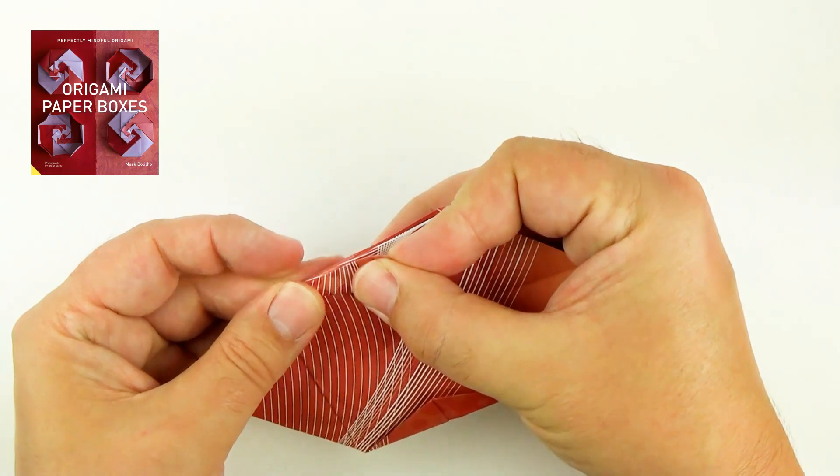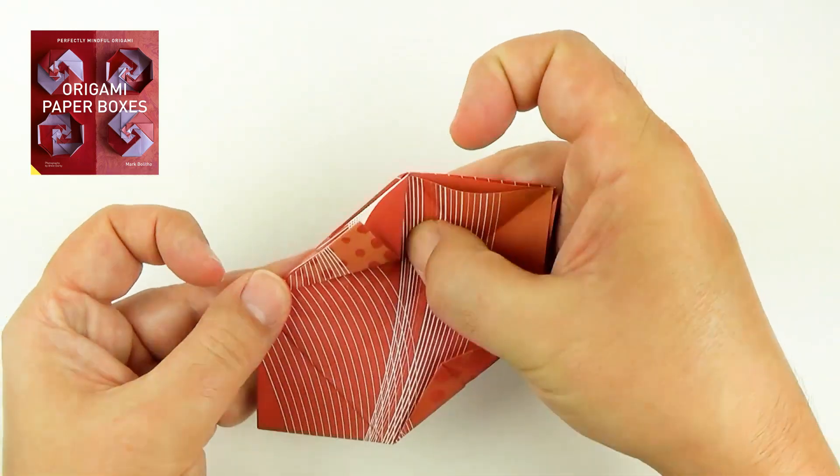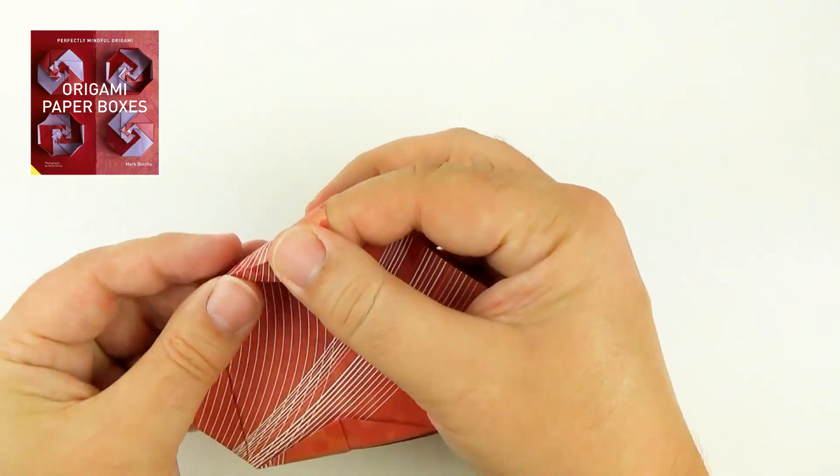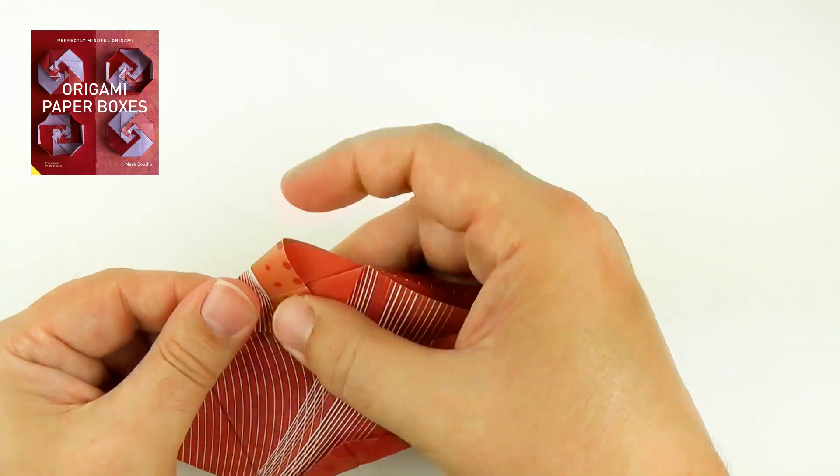Now the last one again. We're folding the edge in to the middle, the crease at least. Unfold. Separate the layers. Fold the corners inside and squash flat.